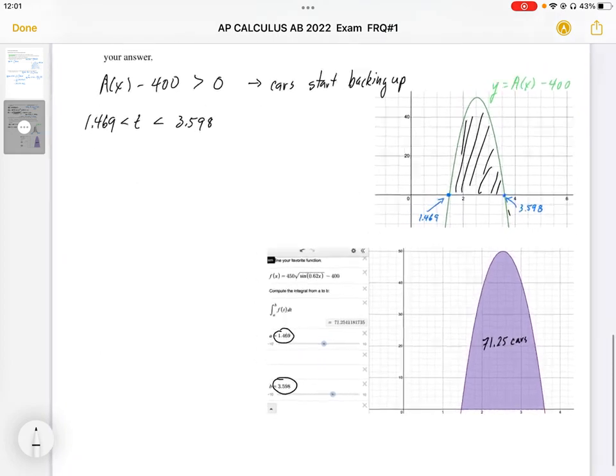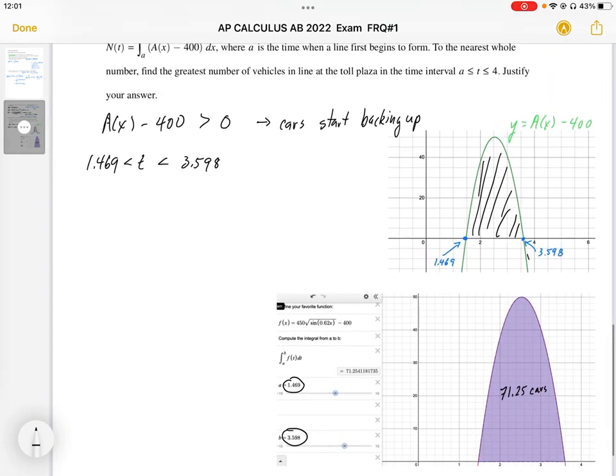So to the nearest whole number, the greatest number of cars is 71 cars.